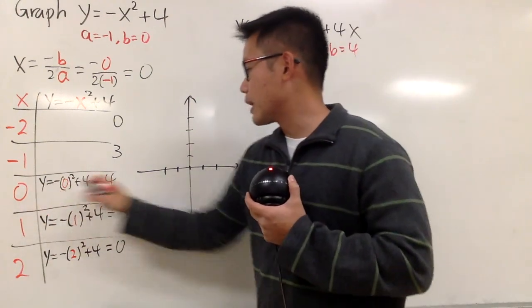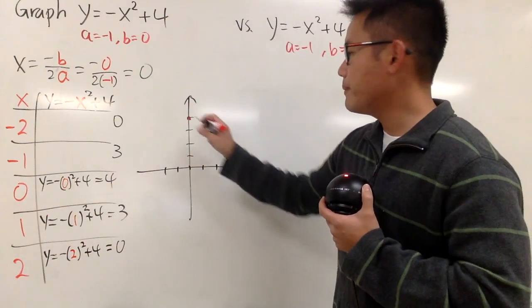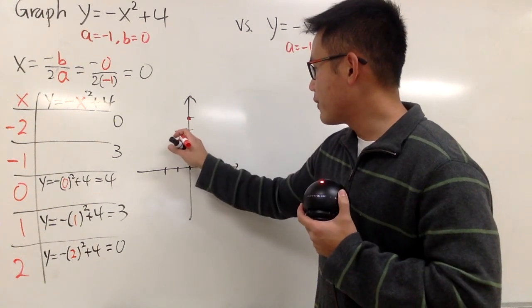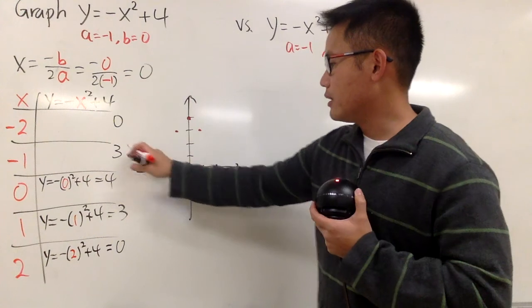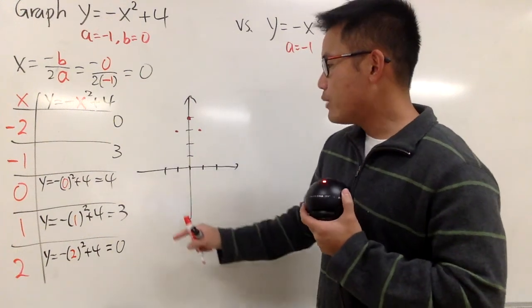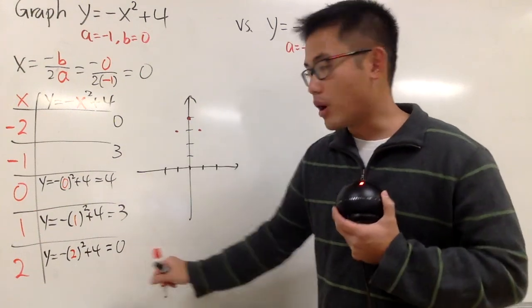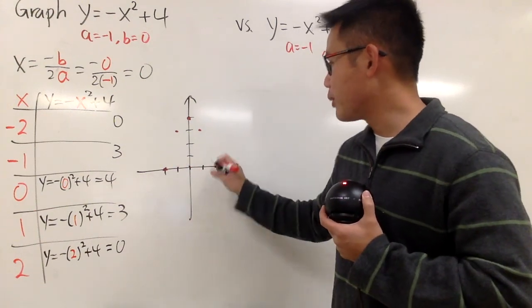First of all, 0, 4 is right here. And then when we have negative 1 and 1 right here, we both have the y value being 3. And when x is negative 2 and 2, the y values are both equal to 0. So we have this point here and this point here.